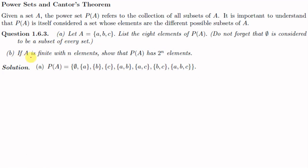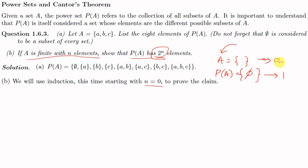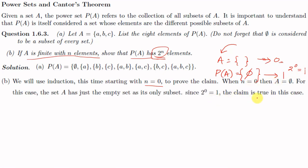For Part B, given that A has n elements, we must show that P(A) has 2^n elements. We use the method of mathematical induction. Starting with n equal to zero: A has zero elements, meaning A is the null set. The only possible subset of A is phi, so P(A) is the set consisting of phi, which has one element. Since 2^0 equals 1, the result is true for n equal to zero.